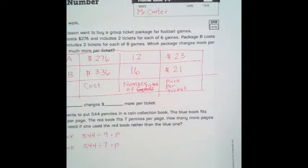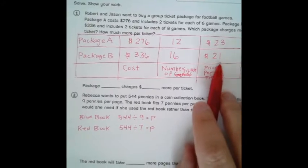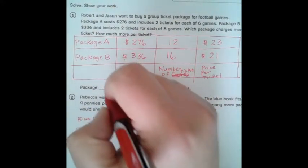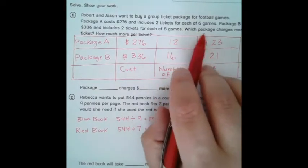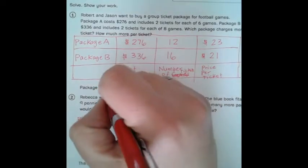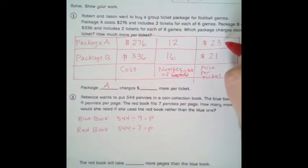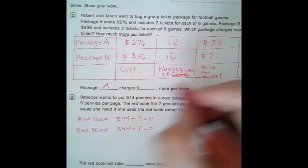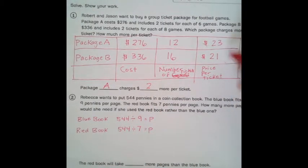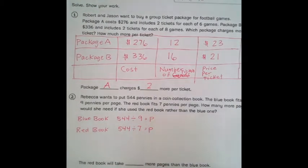So it's actually a better deal to go with package B because they're less money per ticket. So the question up here was, which package charges more per ticket? Well, that's package A. They're charging $23 per ticket, and they charge two more dollars because package B is only 21. So that's a difference of two. So that's how we do number one.